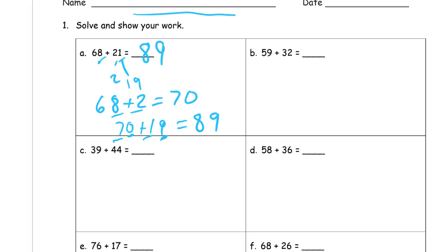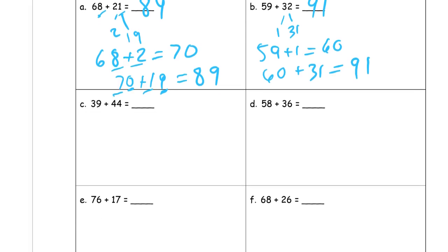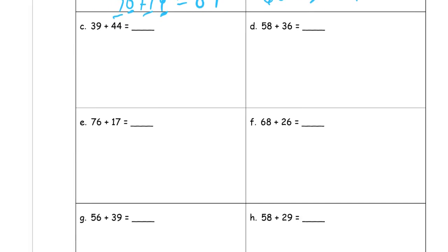59 plus 32. 59 is really close to 60, so it just needs 1 more to get to 60. And that means my other part of this number bond is going to be 1 less than 32. It's going to be 31. So I have 59 plus the 1 makes the 60, and then the 60 plus the 31 equals 91. Now it may be that you're doing these in your head now and you feel like you don't have to write them down, but you do because it says to show your work.